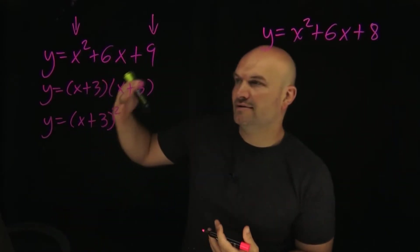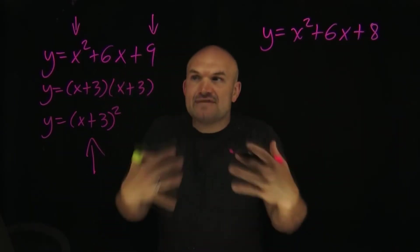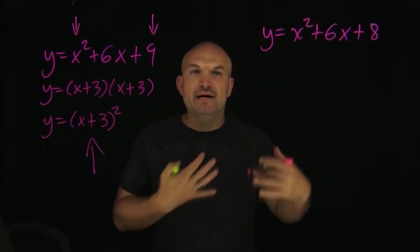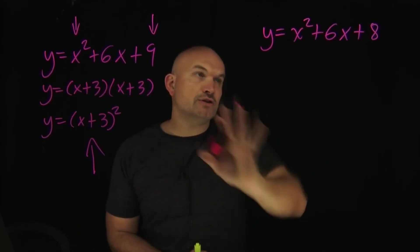So you can see in this example here, this is exactly what I'm looking for. This is going to be my vertex form. That's what I'm trying to create when I am completing the square.